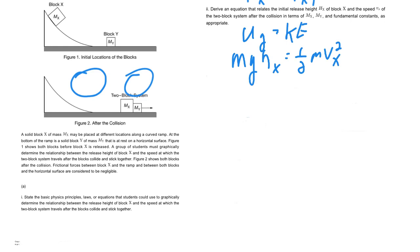And we can do a little bit of algebra here. We can cancel masses. Let's go ahead and solve for VX. So VX equals the square root of 2GH. And this would be the height of block X.